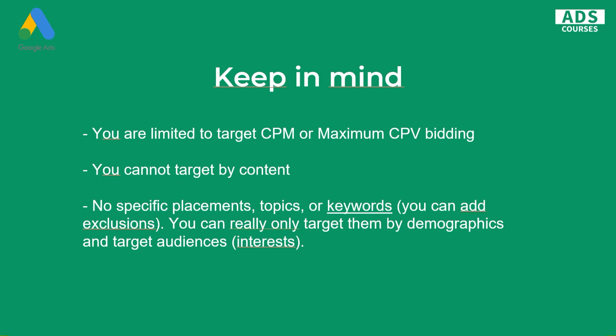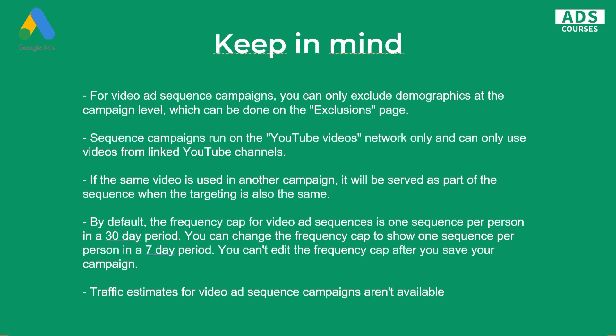You can use your custom audiences too. So you can create a combination — you can exclude your remarketing list, for example. Another thing to note: you can only exclude demographics at the campaign level, so you can't use different targeting on an ad group level.